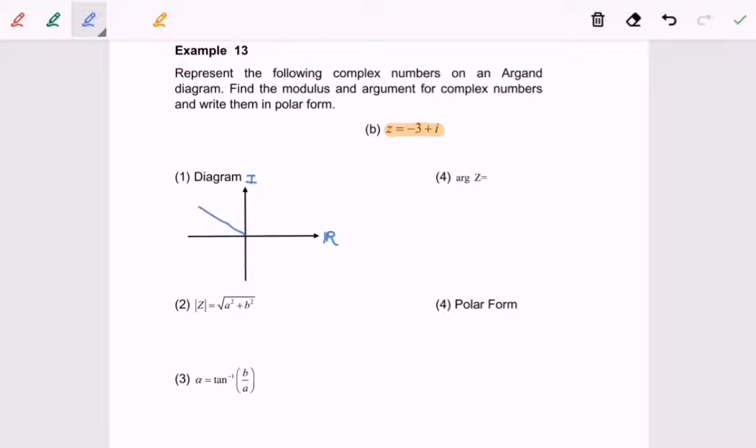Next we're going to find the modulus of z. In this case the modulus of z equals square root of a would be negative 3, so a squared we have 9, followed by b. In this case b equals 1, so 1 squared we have 1. Finally the modulus of z equals square root of 10.